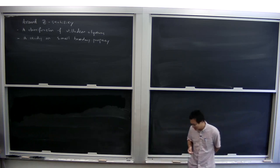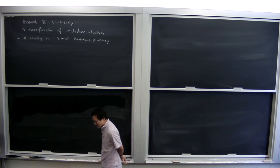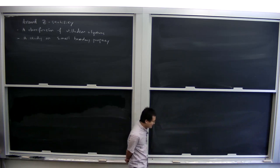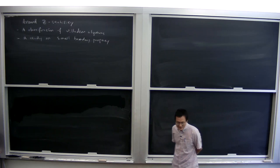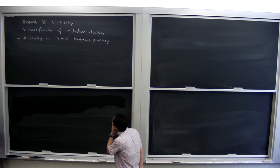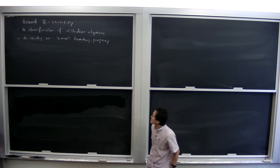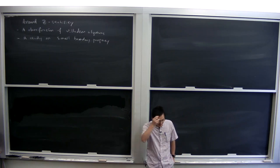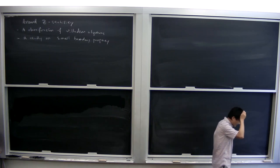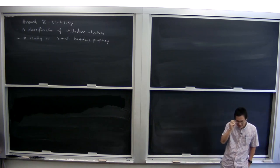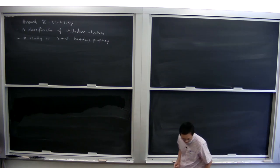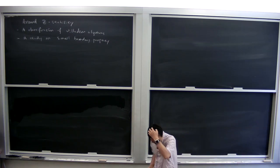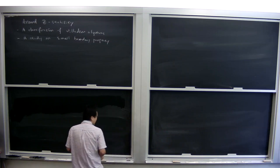I want to talk about Z-stability and about algebras which are not necessarily Z-stable. In the first part, I'm going to talk about a class of C*-algebras called the Villadsen algebras — a famous class of non-Z-stable algebras — and I want to present a classification of this class of non-Z-stable C*-algebras. So let's see what a Villadsen algebra is.